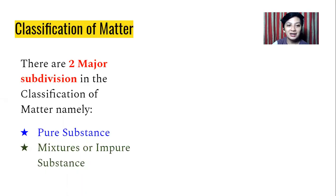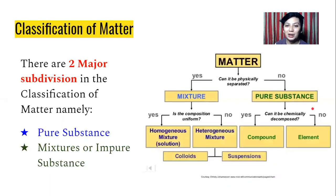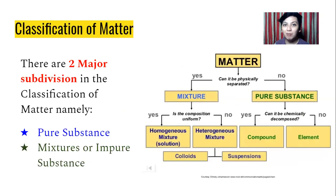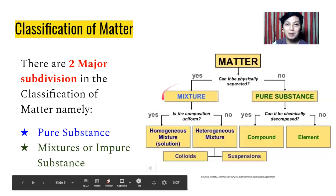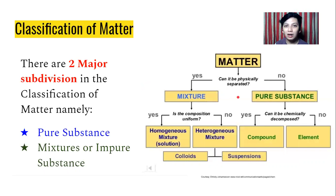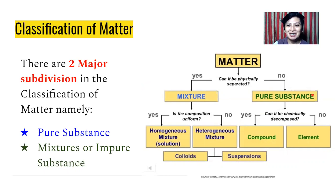There are two major subdivisions in the classification of matter: pure substances and mixtures, also called impure substances. We already tackled pure substances, and now we will focus more on the mixture part. Basically, it is the combination of two or more pure substances. So impure substances — if we have water, sugar, salt, and many more — these are all combinations of those, and that is what we call mixtures.